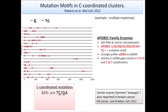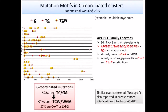If we look further, the cytosines are preceded by thymines — most of them — and followed by either thymine or adenine: TCW. And even further, C-to-T and C-to-G mutations, and a very small number of C-to-A. So it's an exact match with this APOBEC signature. There is something in that very cancer we are looking at that can make this mutagenesis.